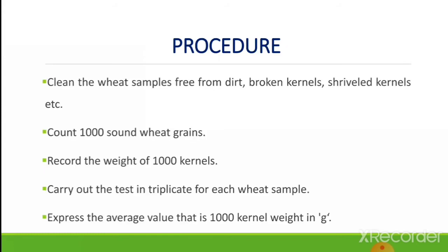Procedure: the first step is to clean the wheat samples free from dirt, broken kernels, shriveled kernels, etc. Next, count 1000 sound wheat grains. After counting, record the weight of 1000 kernels. Carry out the test in triplicate for each wheat sample.